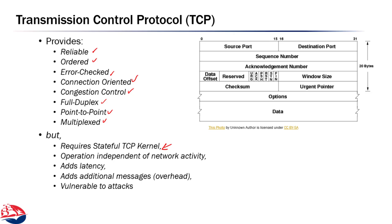Unfortunately, TCP does require a stateful TCP kernel, which is a pretty deep dive. Writing our own TCP kernel is not something we'll do in this class. The TCP kernel has to operate independently of network activity, requiring some level of host OS support. It also requires a certain amount of latency. While UDP allowed sending datagrams with very little overhead, TCP's congestion control, windowing system, ordering, and other features mean additional data gets exchanged beyond the application data, necessarily adding latency and overhead.